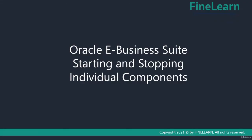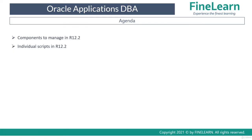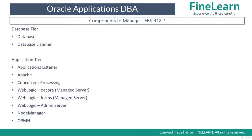In this lesson we'll be seeing how to start and stop the individual components of Oracle E-Business Suite application tier. First we'll see what are the important components of the application tier, then what are the individual scripts related to these components. The main components are application listener, web server or Apache, concurrent processing, WebLogic managed servers, admin server, node manager, and OPMN.